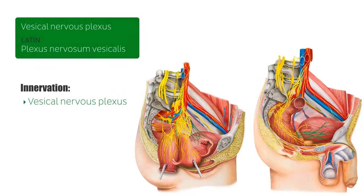Regarding voluntary micturition, motor control is provided by fibers from both the parasympathetic and sympathetic nervous systems, with greater detail to be covered in another tutorial. What's useful to remember here is that storing liquid is under the control of the sympathetic system, while micturition is controlled by the parasympathetic system.